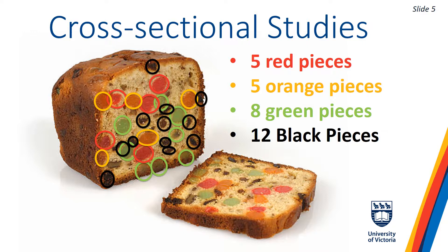Take, for instance, the association between color and being on the bottom. You may have noticed that green fruit pieces are on the bottom, while zero red, zero orange, and one black piece is on the bottom. I hypothesize that this is because the green fruit pieces are heavier and therefore sunk to the bottom while the loaf was baking. Before testing this hypothesis, however, we should evaluate whether there really are more green pieces on the bottom compared to other colors.